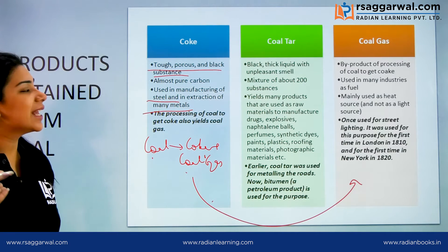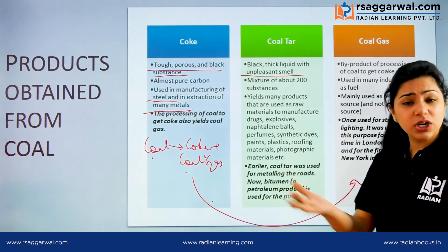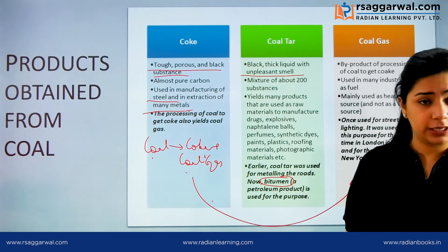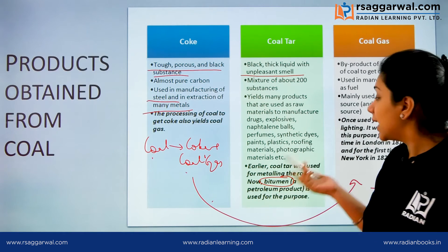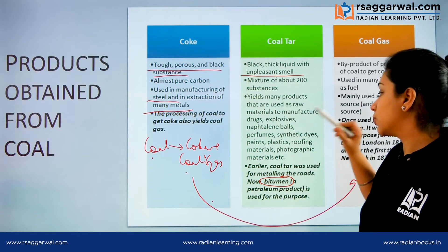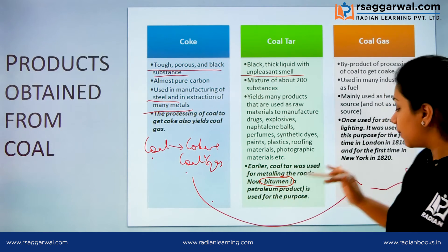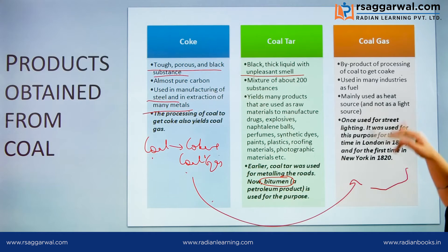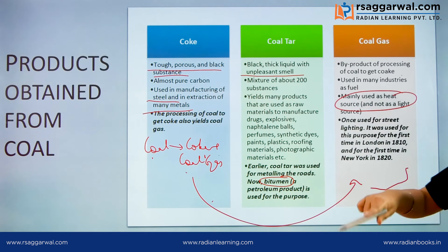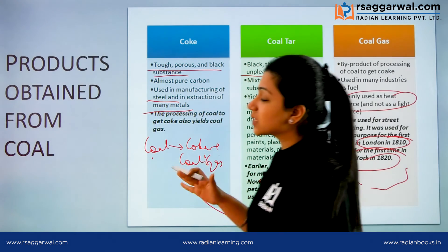Coal tar is a liquid, black, and very thick in nature with a very bad smell. It used to be used for roads, but now we use bitumen instead. Coal tar serves as a raw material to manufacture many products such as drugs, explosives, naphthalene balls, perfume, synthetic dyes, paints, plastics, roofing materials, and photographic materials. Coal gas is a by-product of processing coal to get coke. It is used in many industries as a fuel and as a heat source, and it was historically used for street lighting in cities like London and New York.